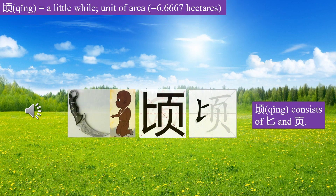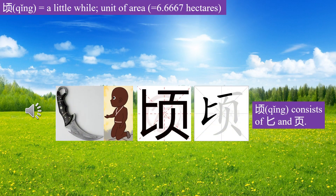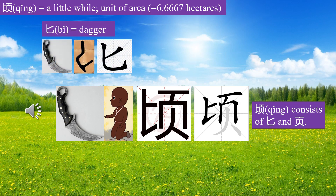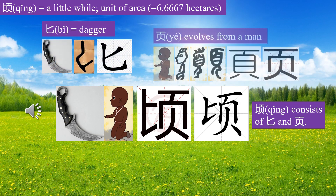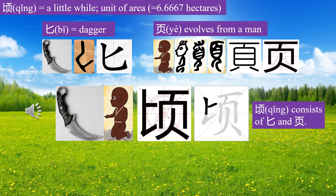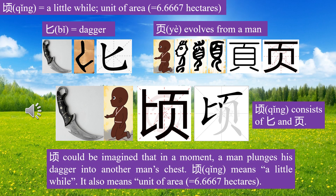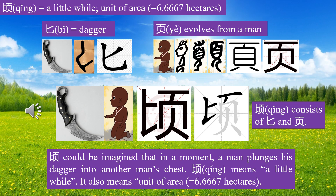Character Qin consists of Bi and Ye. Bi means dagger. Ye evolves from a man. Qin could be imagined as a man plunging his dagger into another man's chest in a moment. Qin means a little while. It also refers to the unit of area.